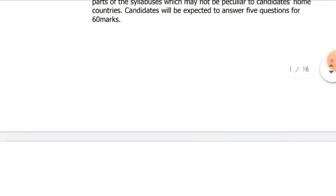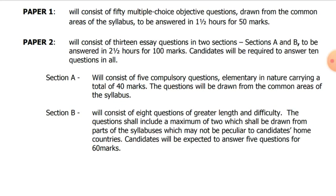In Section A, the objective, you answer all 50 questions. But in Section B, it will be eight questions out of the 13 you will answer.